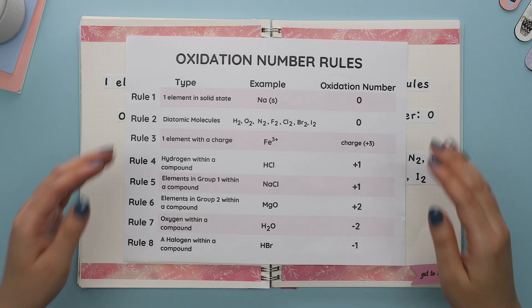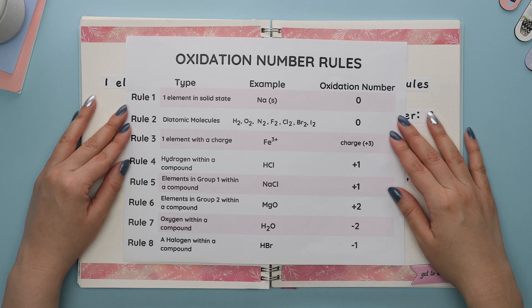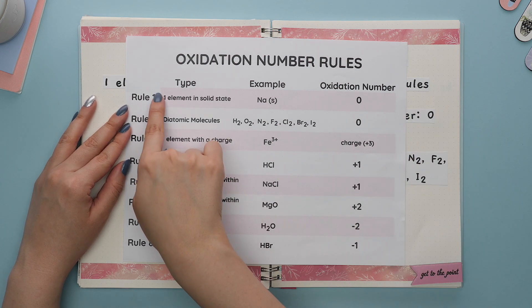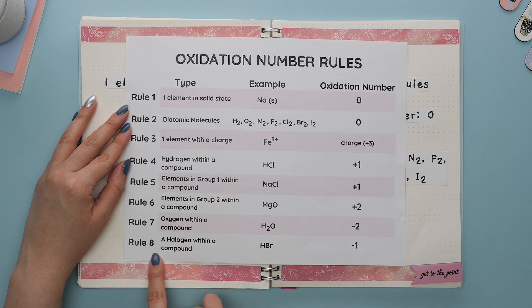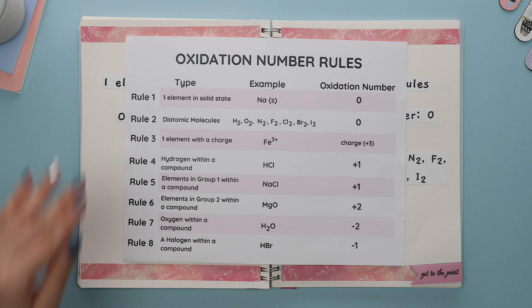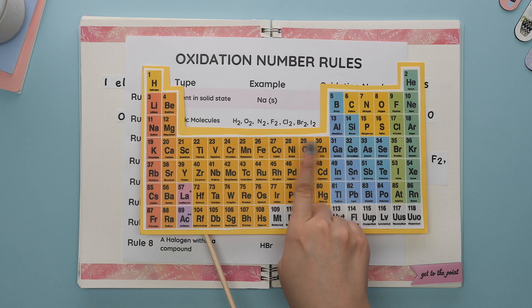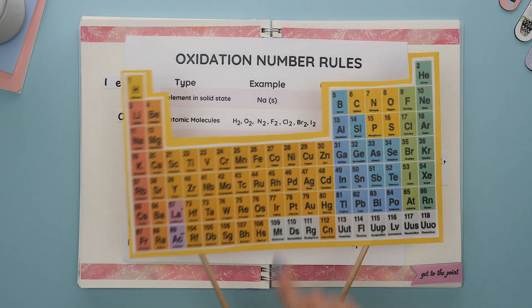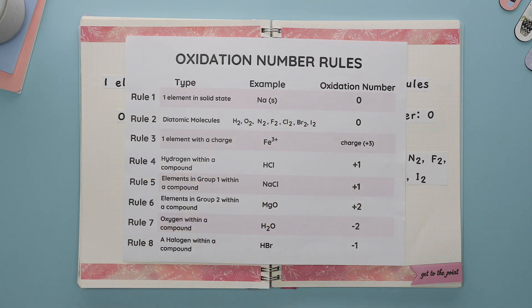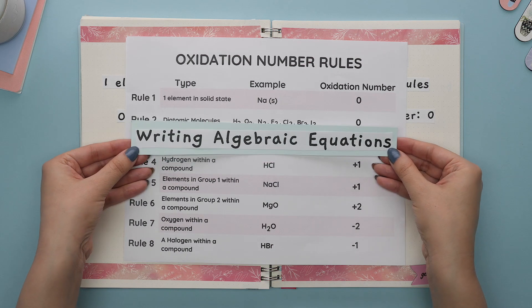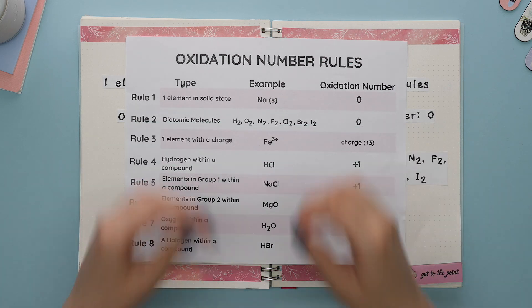There are specific oxidation number rules that you are required to memorize. These oxidation number rules are to be used in a specific order. Notice that these rules do not apply to each element on the periodic table — there are some that we will need to figure out by writing algebraic equations.